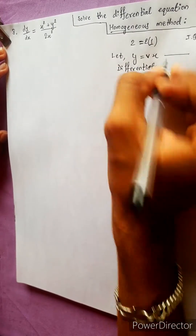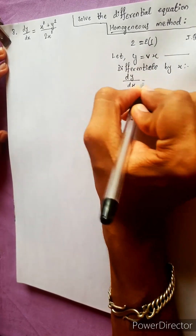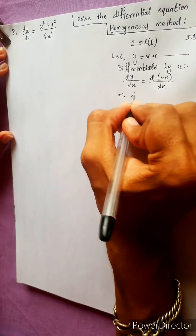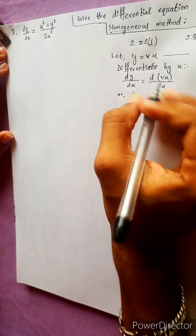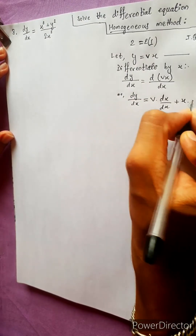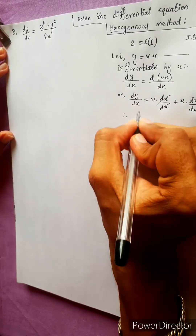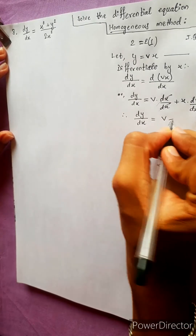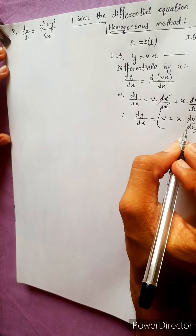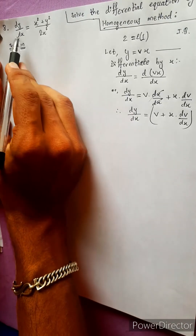Differentiating both sides with respect to x: dy/dx equals dv/dx times x plus v, which gives dy/dx equals v plus x times dv/dx.